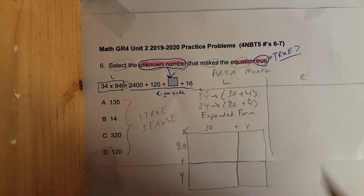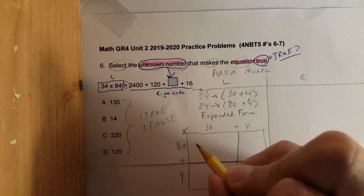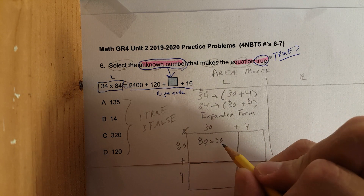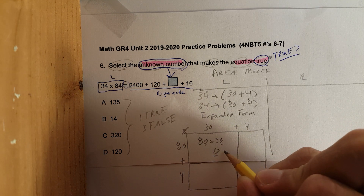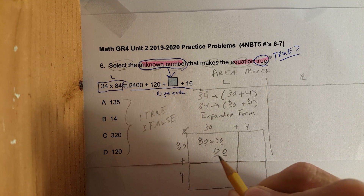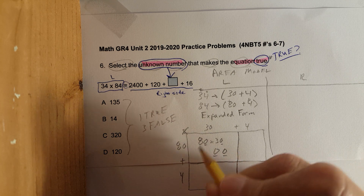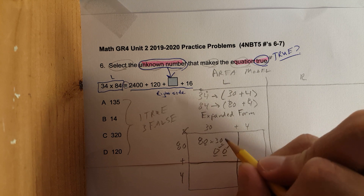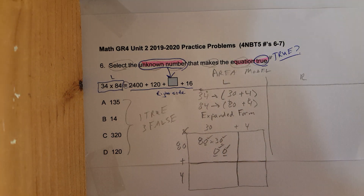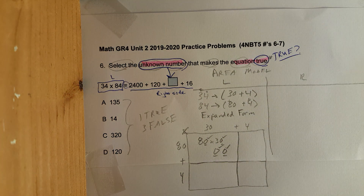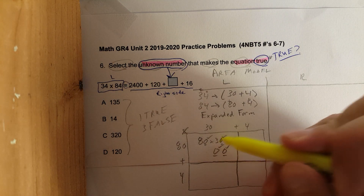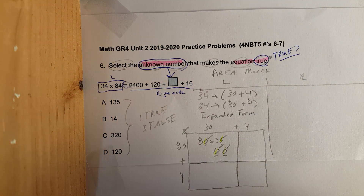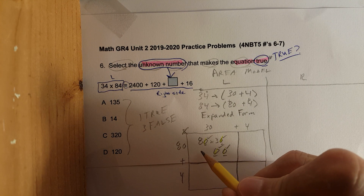I was doing area model problems with students today, and in the first box we have 80 times 30. A student forgot one of the zeros — if you forget a zero it changes the entire problem. Notice how I'm checking each one. Make sure you check each one — double check, triple check, quadruple check.